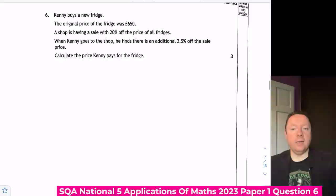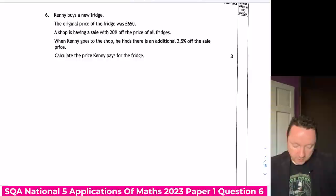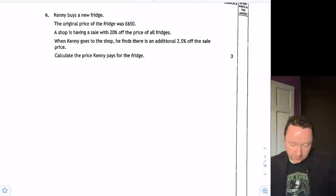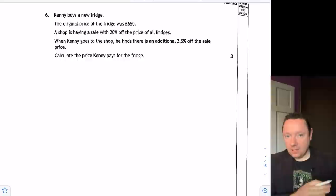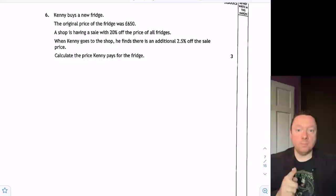National 5 Applications 2023 Paper 1 Question 6. Andy buys a new fridge. The original price was £650. The shop is on sale with 20% off all fridges. He goes into the shop and he gets an additional 2.5% off the sale price. How much does he pay for the fridge? Do not be tempted to take away 22.5%, 20 and 2.5. That is not what's happening here. You're getting 20% off, then you've got a new price, then you're taking 2.5% off. We always try and trick you with this one. So be careful with that.